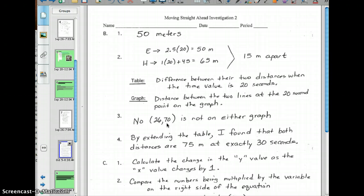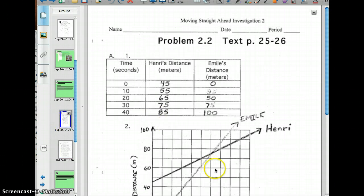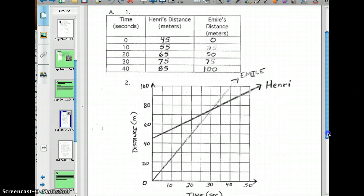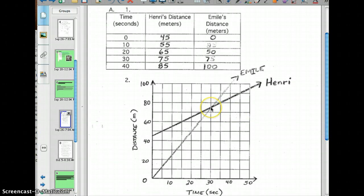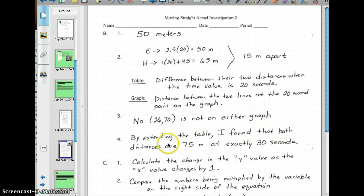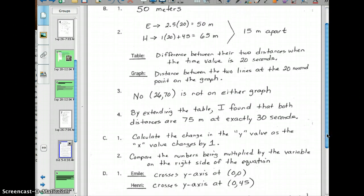When will Emil overtake Henry? That means when is he going to pass them? Well, if you look at the table and where the lines meet, they meet at this (30,75), right. That's where they're tied. So at what time does he pass him? Well, that's going to be one second after that. So after 30 seconds, or 31, after 30 seconds, and Henry, excuse me, Emil is going to overtake Henry.